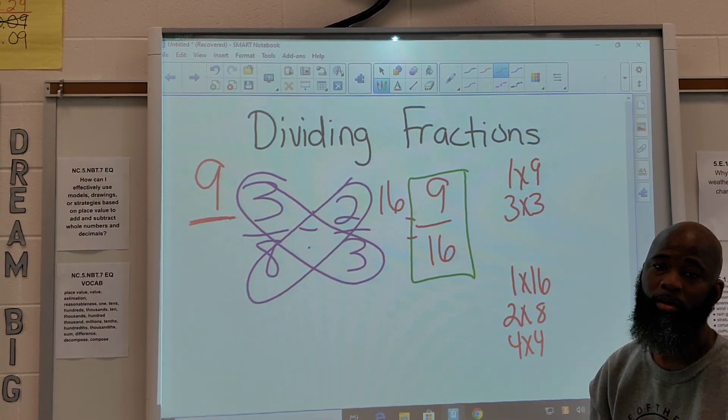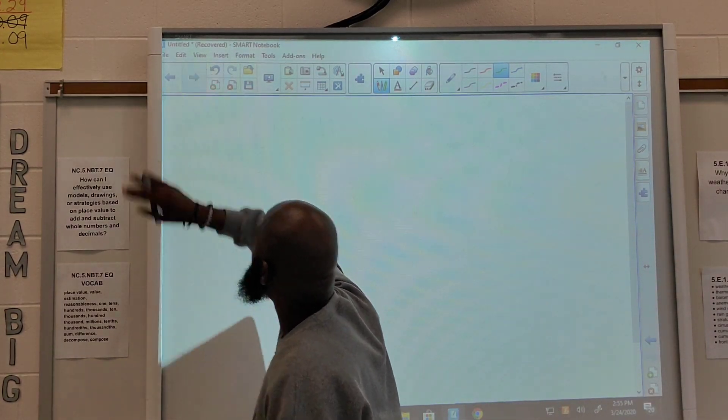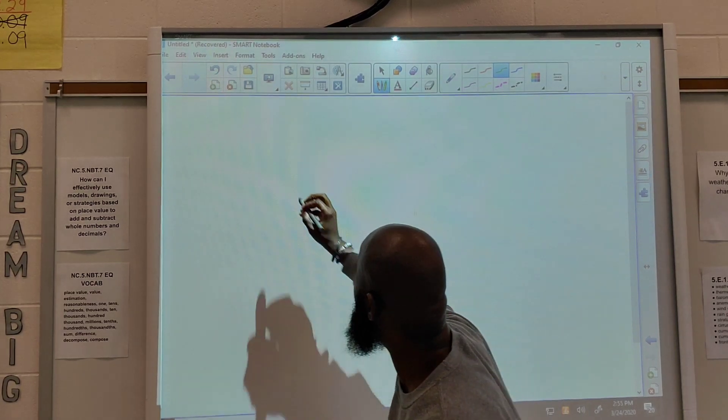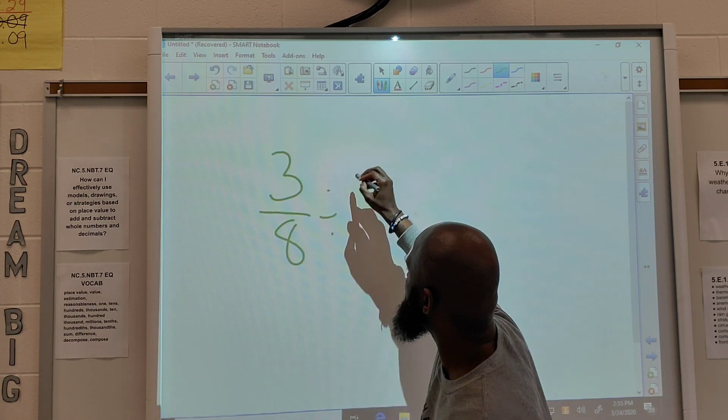Alright, so that's the butterfly method. Now, let's change it up. We're still dividing. Now, let's do keep, change, flip. So, we have 3 eighths divided by 2 thirds.